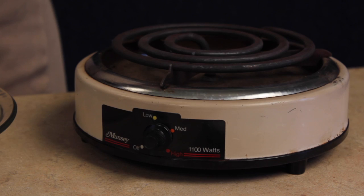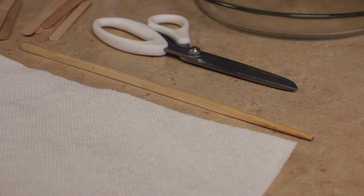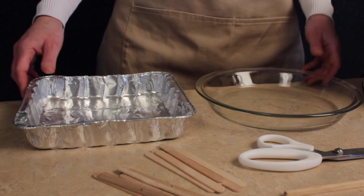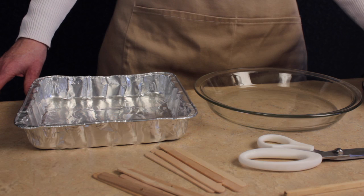a heat source capable of bringing water to a boil, a chopstick or similar item for stirring the wax, a shallow container to hold the votive cups. A pie plate or small disposable aluminum pan will work well.